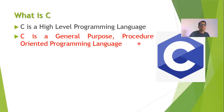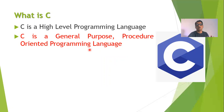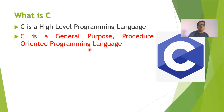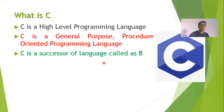C language is a procedure oriented programming language. Most C programs are a collection of procedures or functions. In C programming, a big task is divided into small sections, and for each section we can develop a function or procedure. Therefore, C language is a procedure oriented programming language.